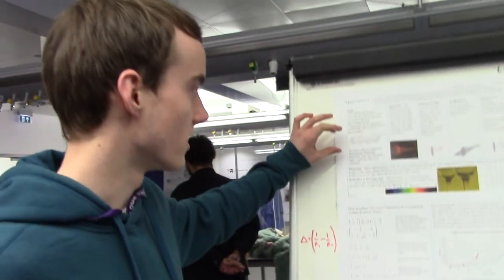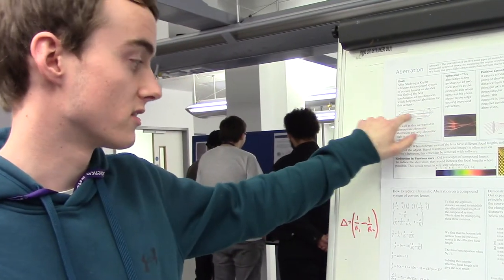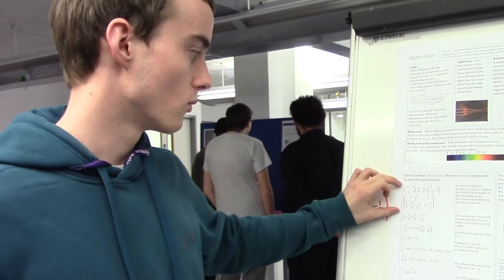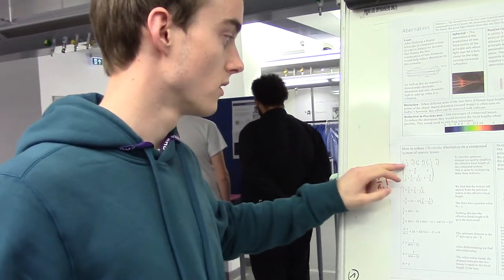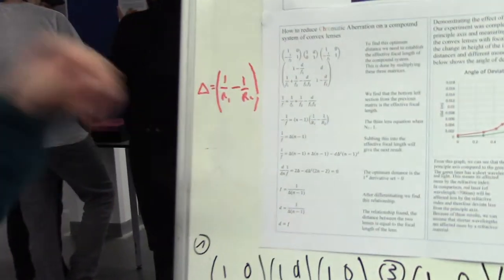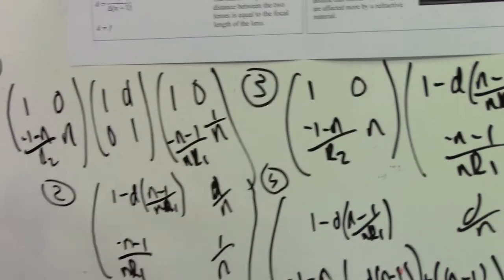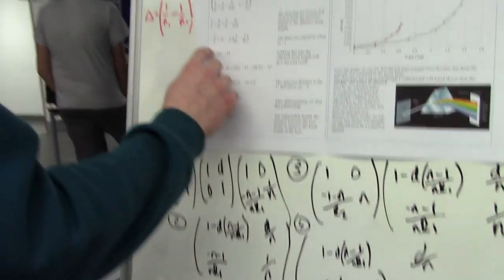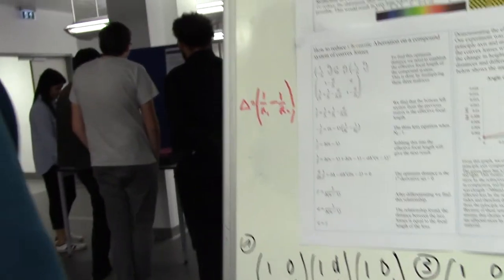We wanted to apply that to a Kepler telescope, which is a compound system of two complex lenses separated by distance. We found the effective focal length of that system as a result of the matrix multiplication here, and we found this. We got the lens equation from this matrix multiplication, so that gives this for the thin lens—you ignore the n1 minus d over nr1r2.